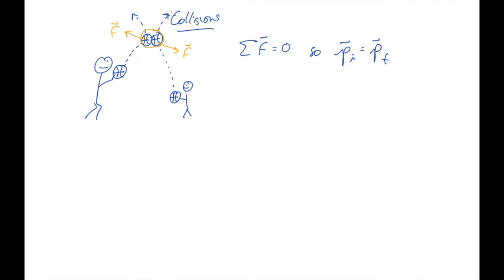A couple of things about this momentum conservation. Let's notice first that it's a vector equation. In order for the initial momentum to equal the final momentum, each of the components also must be conserved.